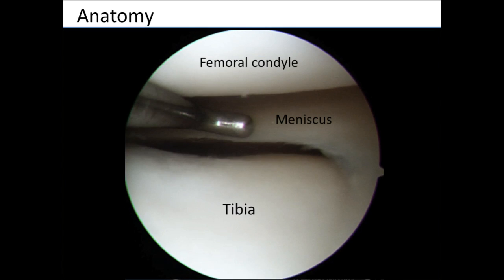Now that we've looked at the anatomy on the model, this is what it looks like when we put a camera inside the knee. You can see the femoral condyle — that's the end of the femur bone with the cartilage on it. We have the meniscus, which is this cushion, and you can see the metal probe is on it. And then we have the tibia, the leg bone, with its articular hyaline cartilage on it.